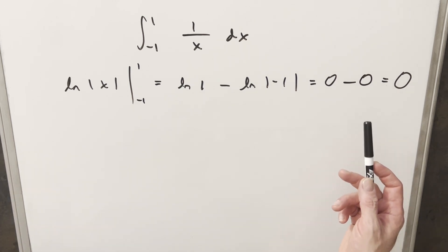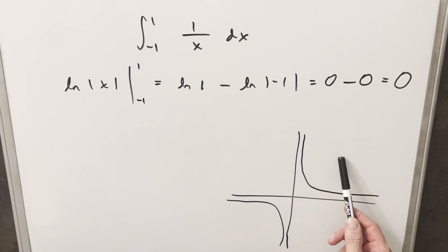But before we just finish the video, let's take a quick look at the graph and see if there's any problems. So here's a very rough graph of 1 over x. And we see we get this issue here. What's happening is we're going off to infinity on the right side when we get close to 0. And we're going off to infinity on the left side when we get close to 0.